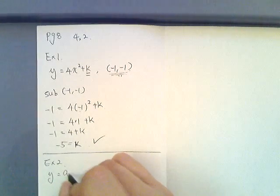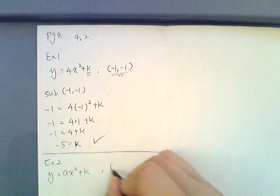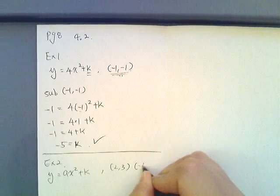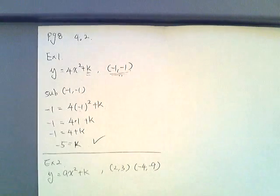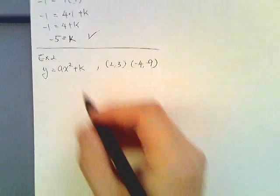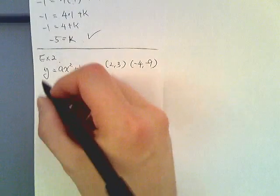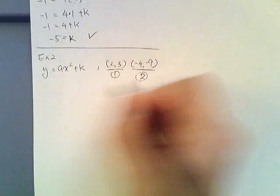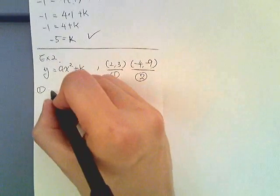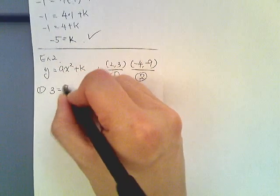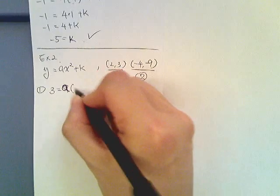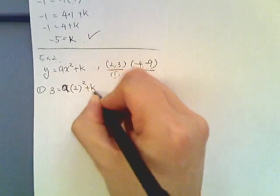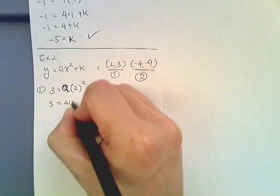Example 2, we have y equals ax squared plus k and then 2 points: 2 comma 3, negative 4 comma negative 9. And it says find a and k. So in this case same thing, use the given information. So I will label this as point 1, point 2. For point 1, substitute it in: 3 equals a, 2 squared plus k. Therefore 3 equals 4a plus k.